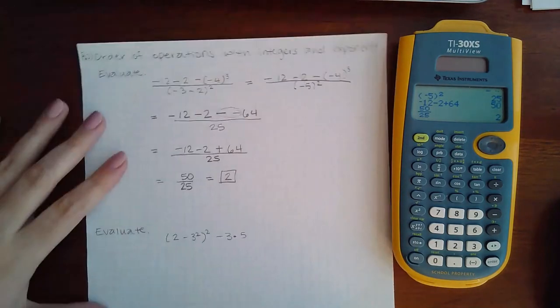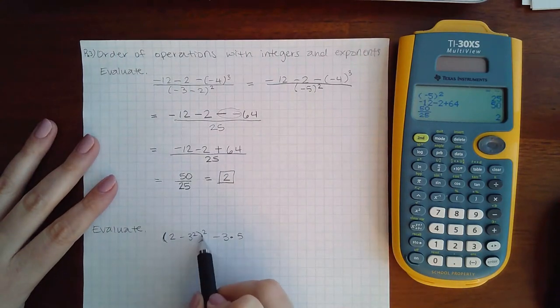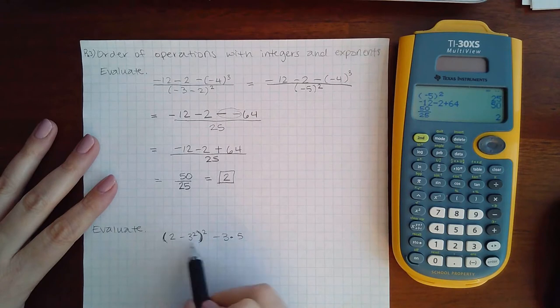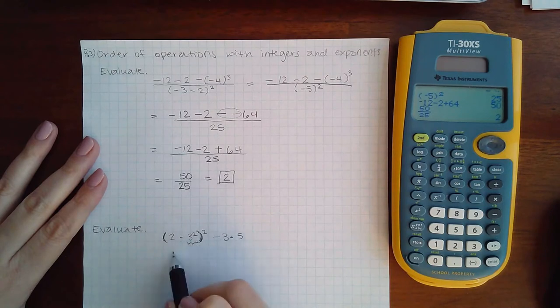Now the next problem is still order of operations. So I would do what's inside the group. But in the group, there's two things to do. There's a subtraction and an evaluation of an exponent. I have to do the evaluation of the exponent first before I'm allowed to do the subtraction.